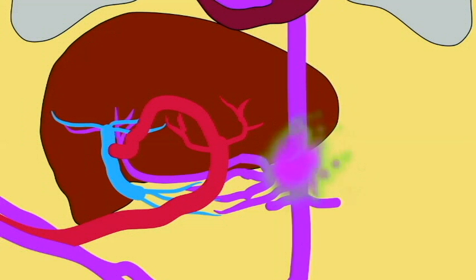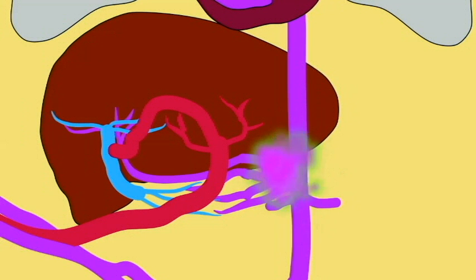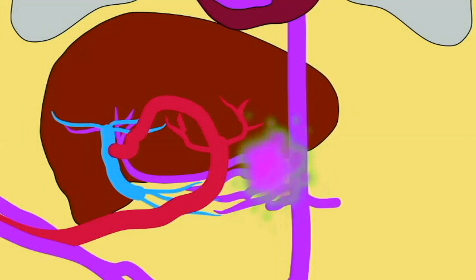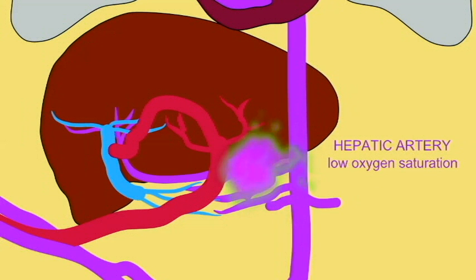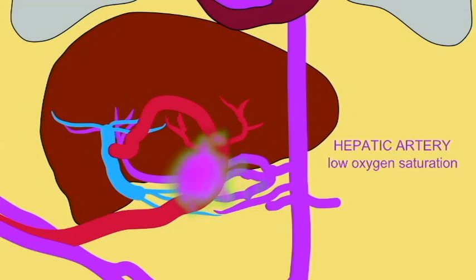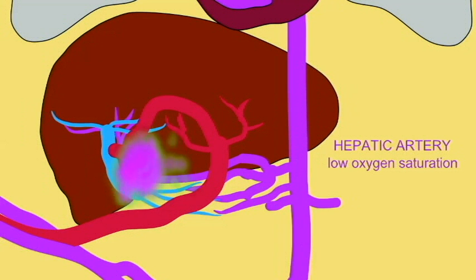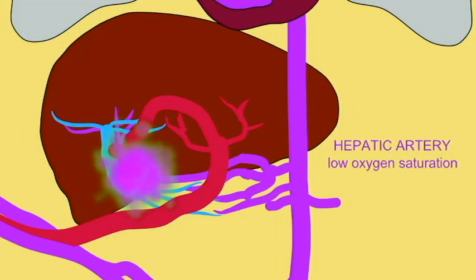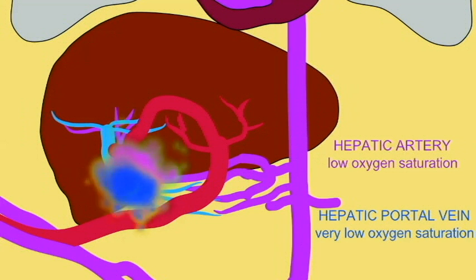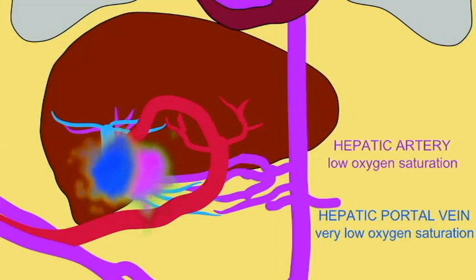There are three separate sources of blood reaching the liver. The abdominal aorta forms unpaired arteries such as the celiac trunk and the superior mesenteric artery, which brings low oxygen blood to the organs of the digestive tract. One of the branches of the celiac trunk, the hepatic artery, proceeds to the liver. The others service the stomach, small intestine, large intestine, and spleen, and then their veins drain into the hepatic portal vein which proceeds to the liver.